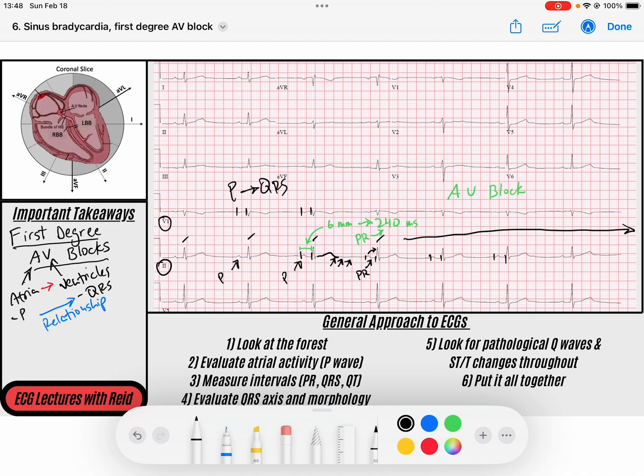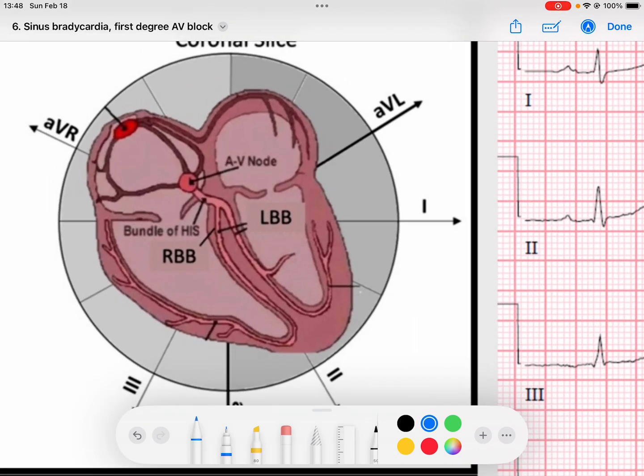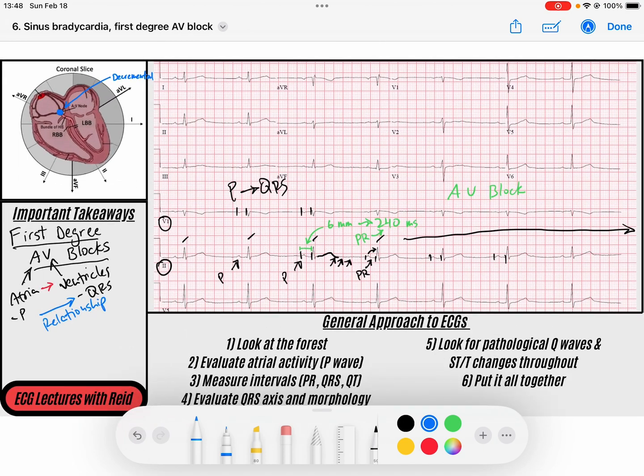And every single P conducts to a QRS. And based on our anatomy beforehand, we know that the AV node itself is where we can see the slowing of that conduction. So the AV node itself, not the His bundle, is delaying that signal for too long. So we're seeing evidence of that decremental behavior, decremental conduction, earlier in terms of rate than we should. Usually that only occurs when we get to really fast rates, but we're seeing it at normal rates here.